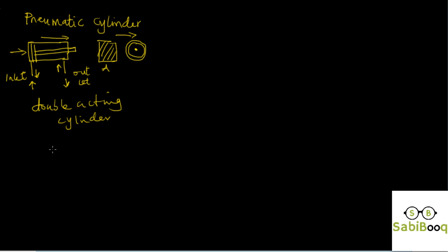A simple directional valve would look like this. These two blocks represent the switching positions — like you have a switch at home that operates light bulbs, with an on and off position. So these blocks here represent the switching positions for this valve.